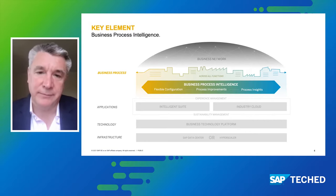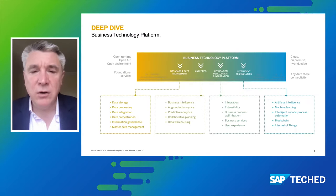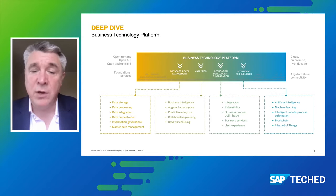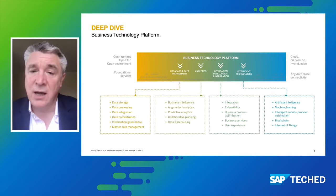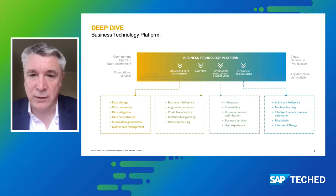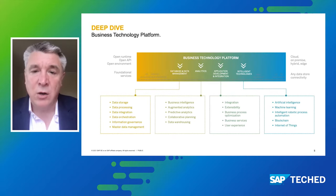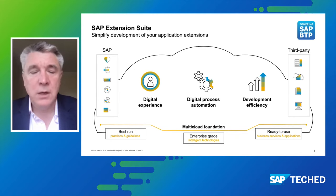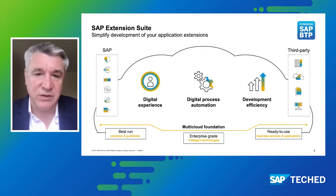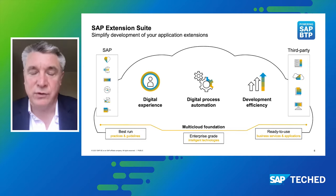Let's drill down further into the portfolio. The business technology platform underpins the entire intelligent enterprise, and within it there are four different pillars. Today we're going to focus on application development and integration, and most importantly, looking at the extension suite and process automation. Within the extension suite, we split it into three different interoperable areas that all work seamlessly together.